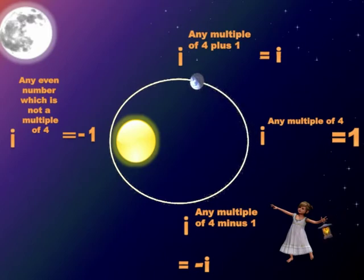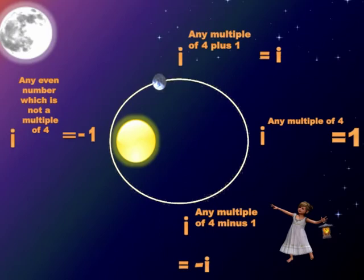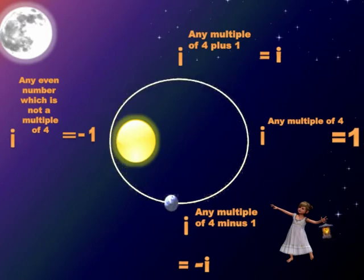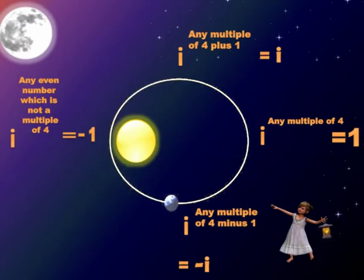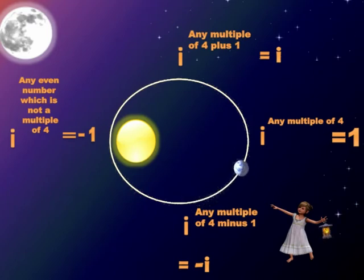So i raised to any multiple of 4 plus 1 equals i. Now, i raised to any multiple of 4 minus 1 — for example i raised to 3 — equals minus i. i raised to 7 (8 minus 1, where 8 is a multiple of 4) also equals minus i. This applies even for large numbers: i raised to 399 (400 minus 1) equals minus i.